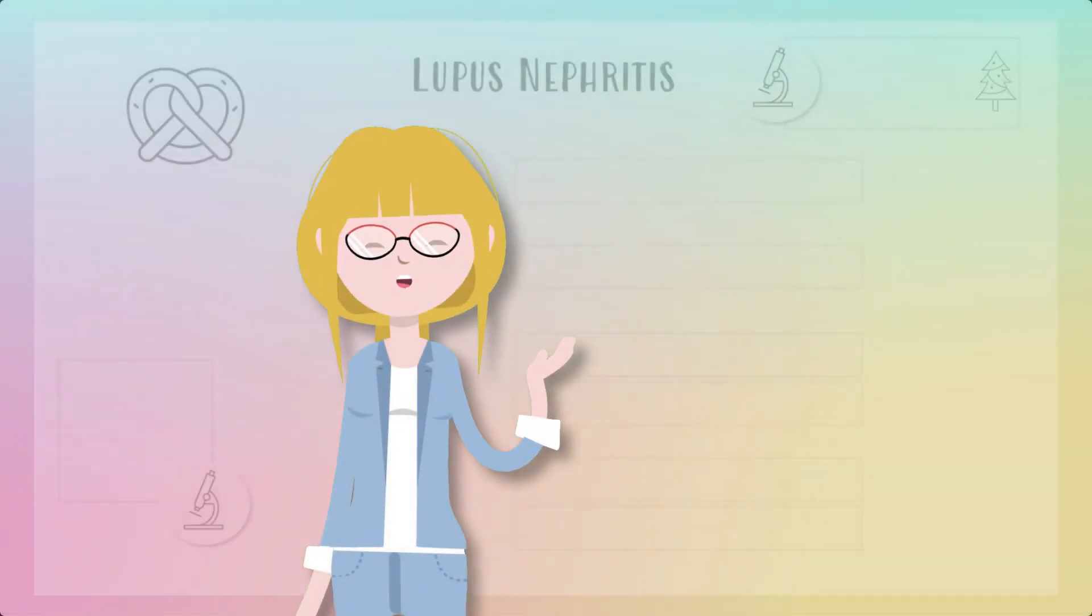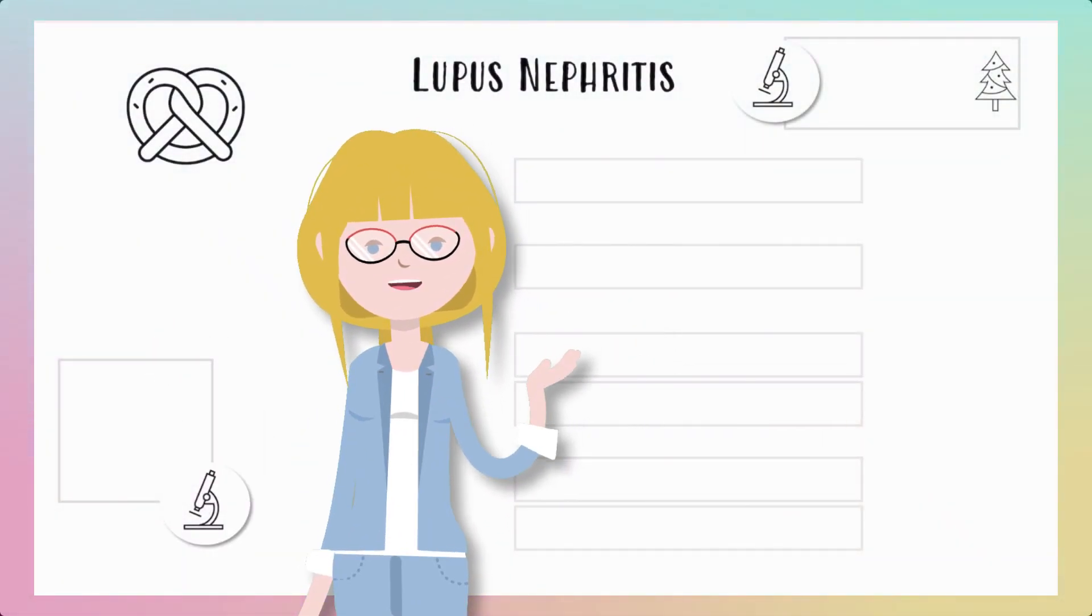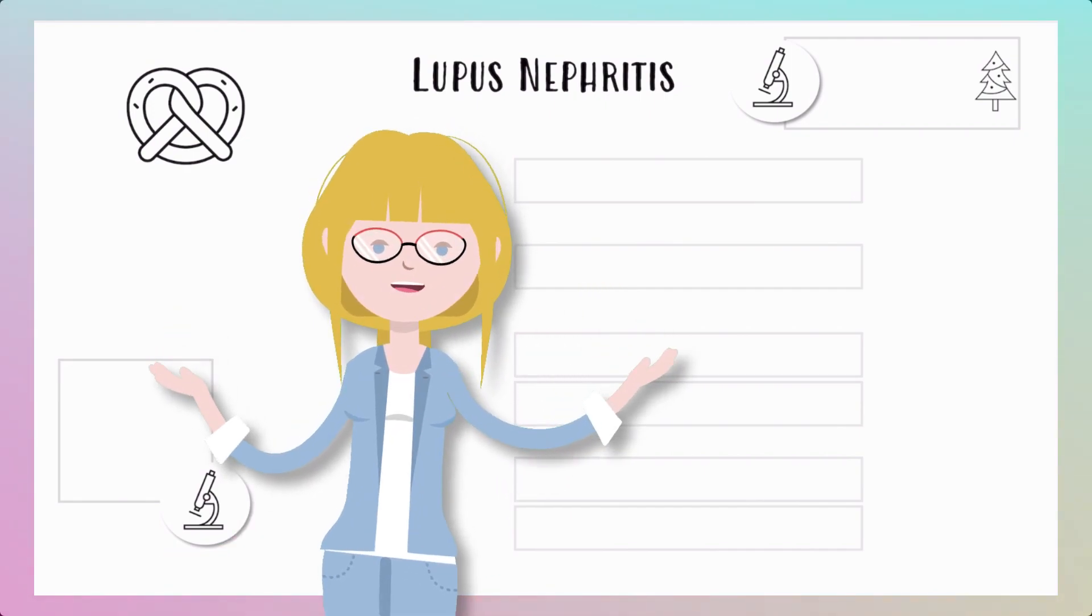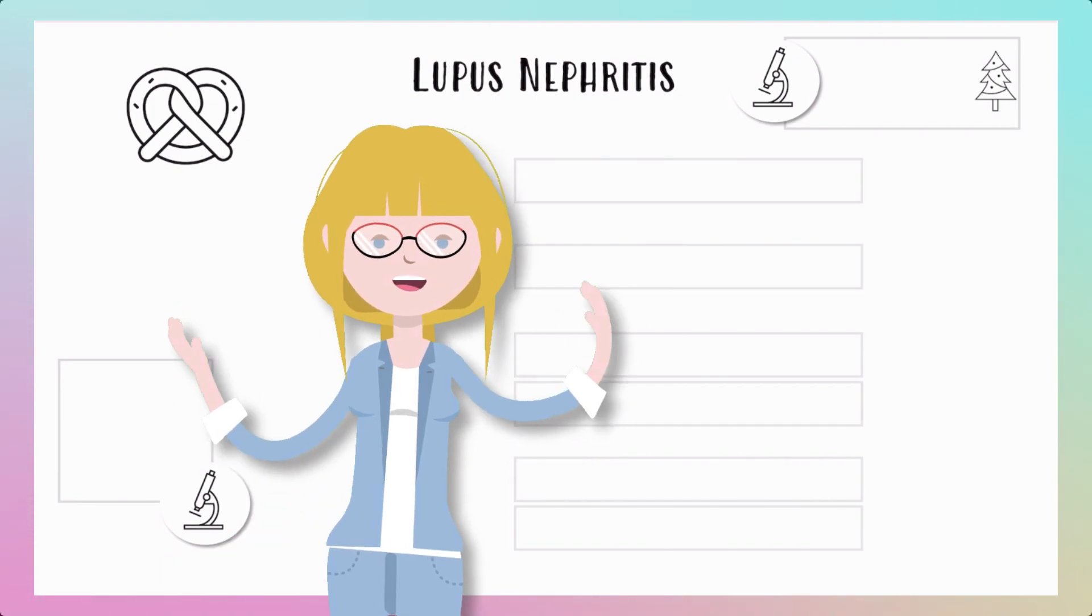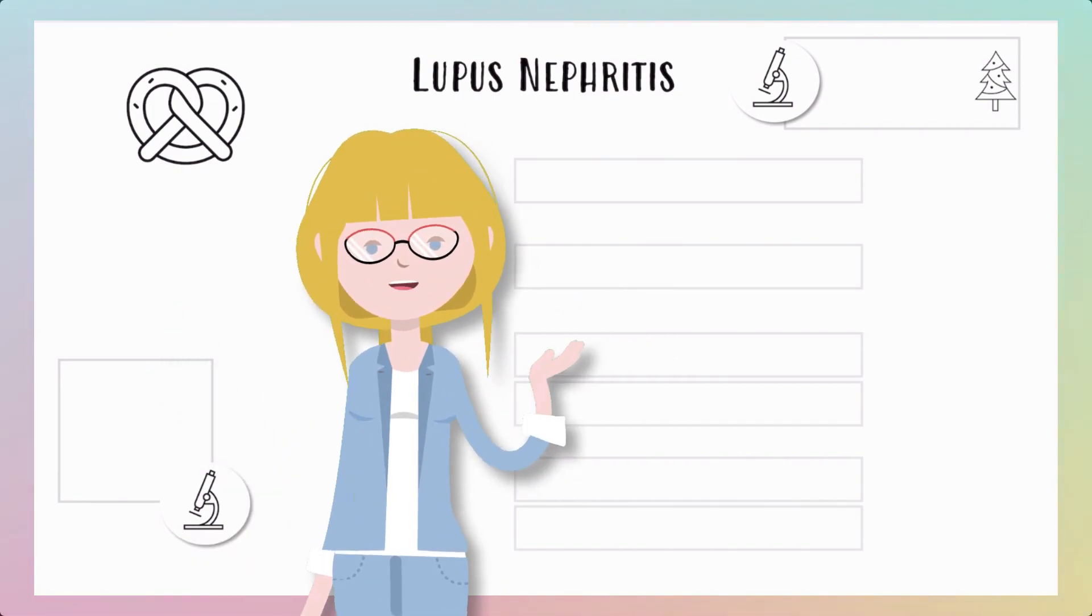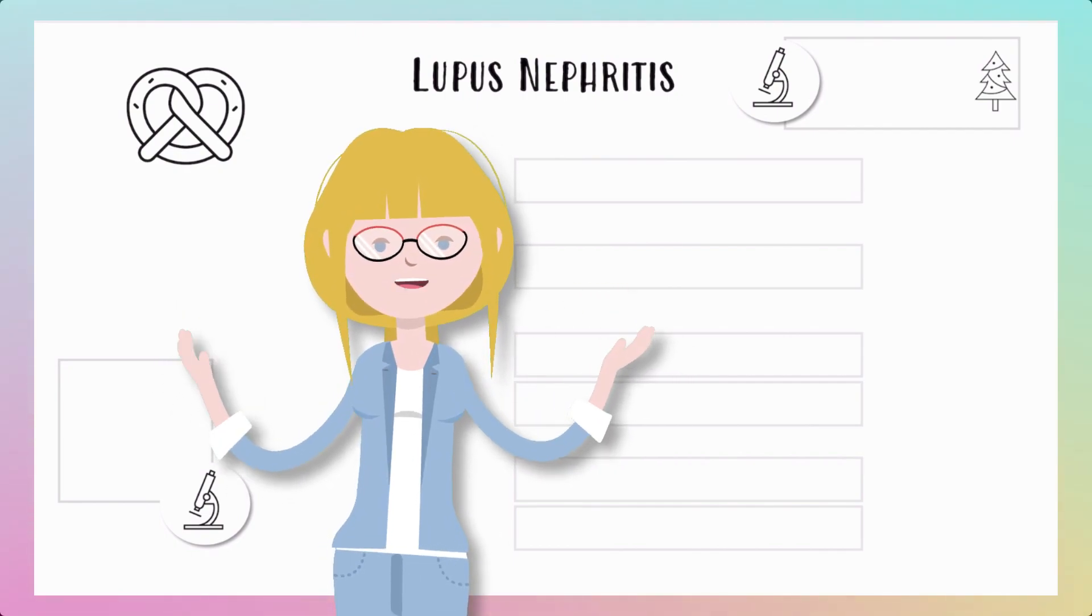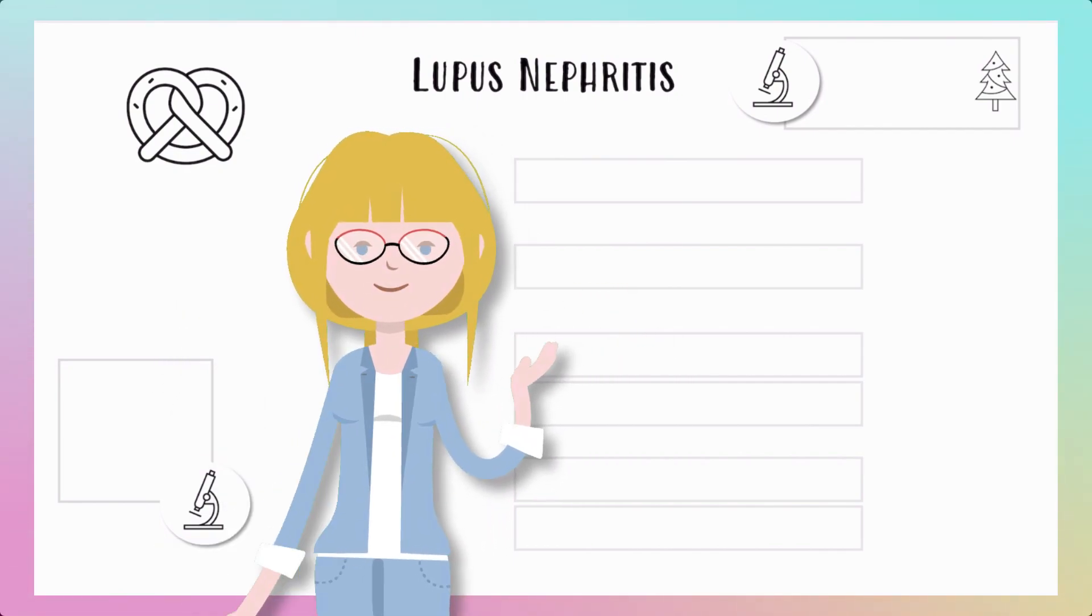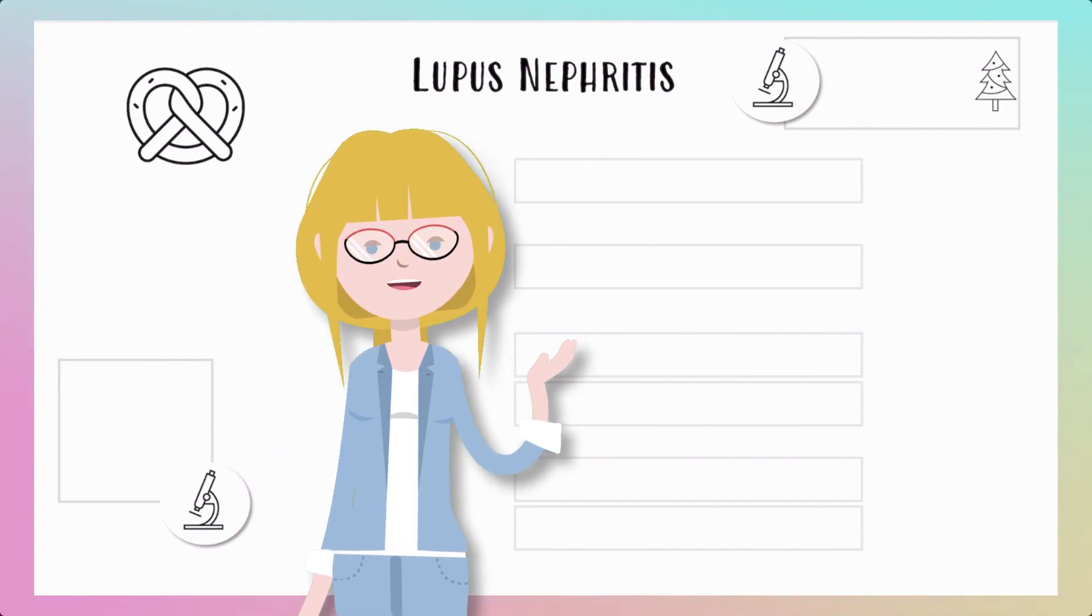There are six classes of lupus nephritis which are determined on renal biopsy and it's important to know which class you're dealing with because the management of each class is slightly different. There are some classes which do not require immunosuppression and others which absolutely do. Assigning these classifications is very useful to patient care.